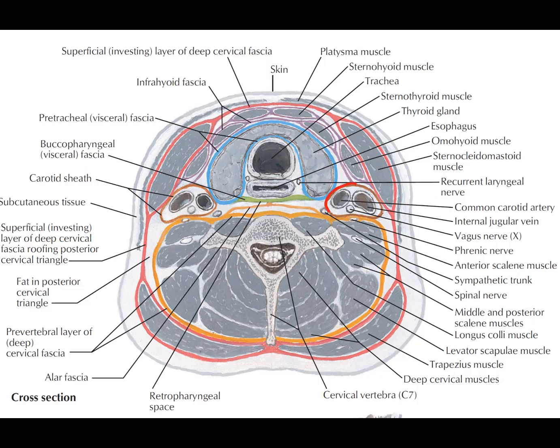We also have the carotid space, or carotid sheath, which contains the jugular vein, the carotid artery, and the vagus nerve. On the surface of the carotid sheath lies the plexus formed by the cervical nerves. These are the different fascias encountered in the neck.